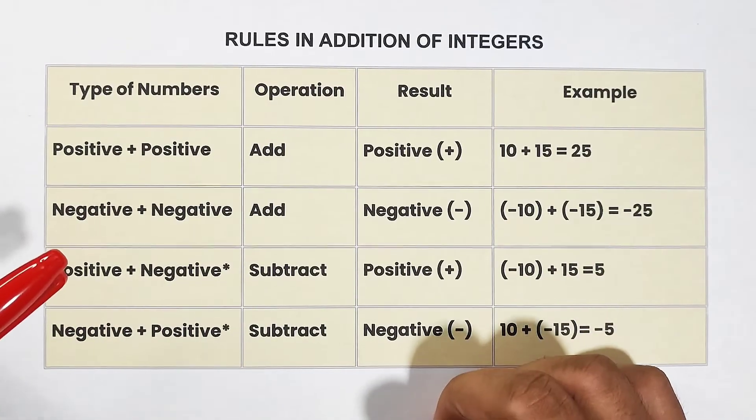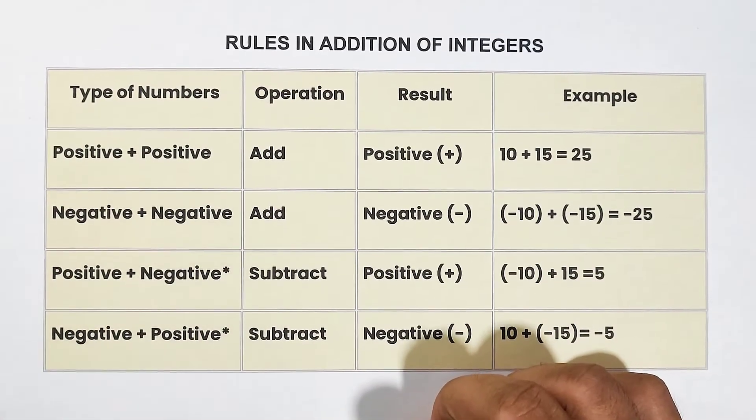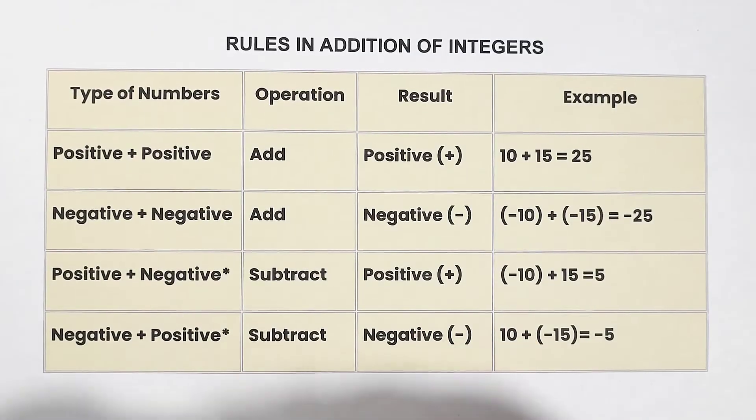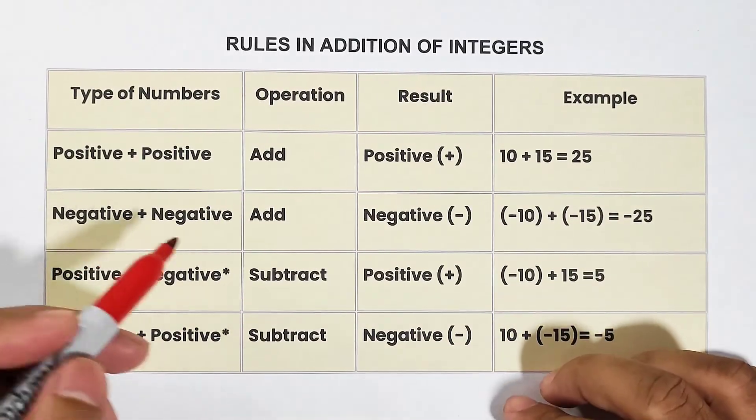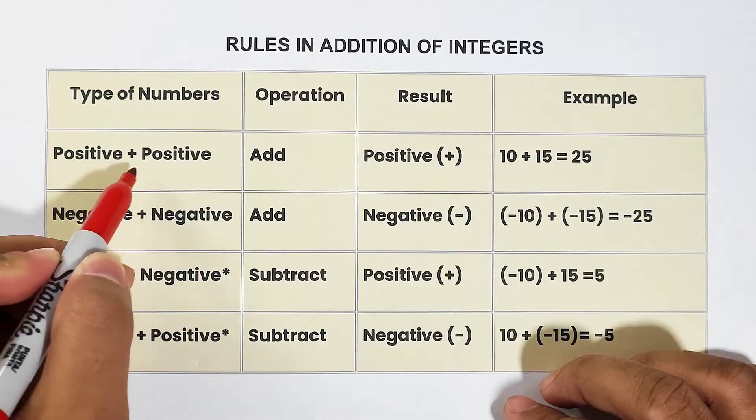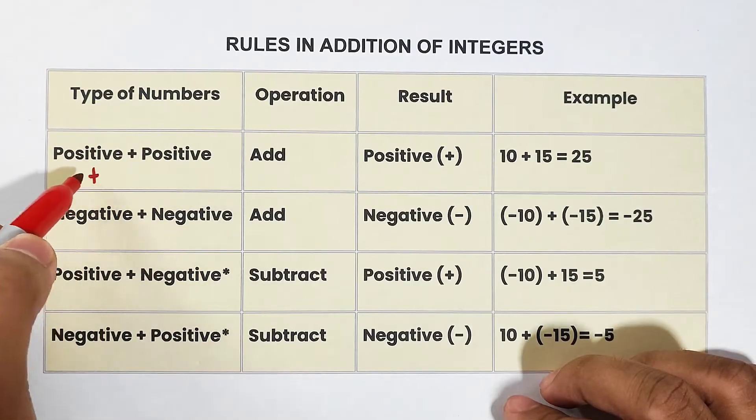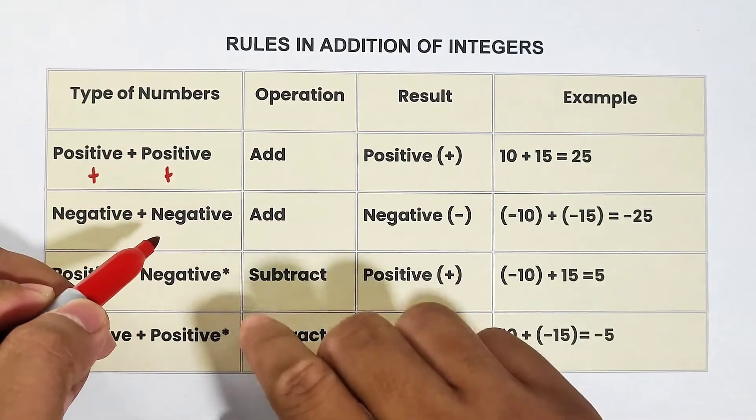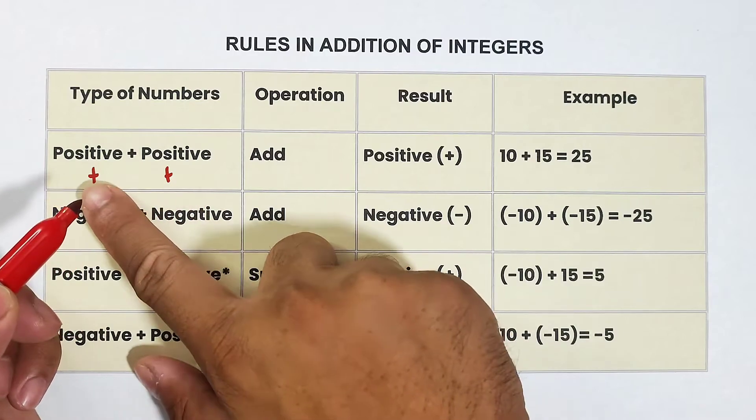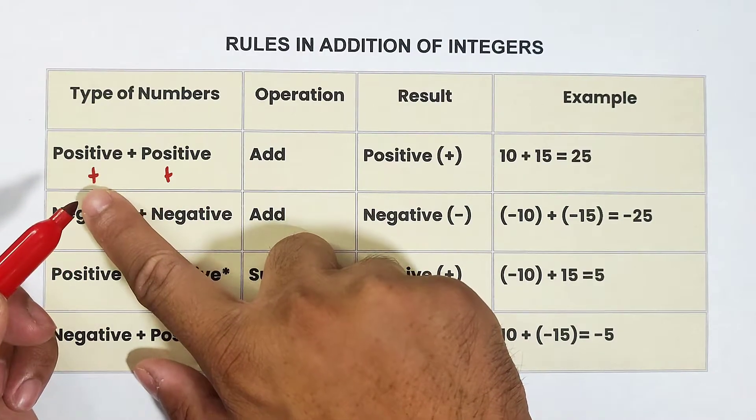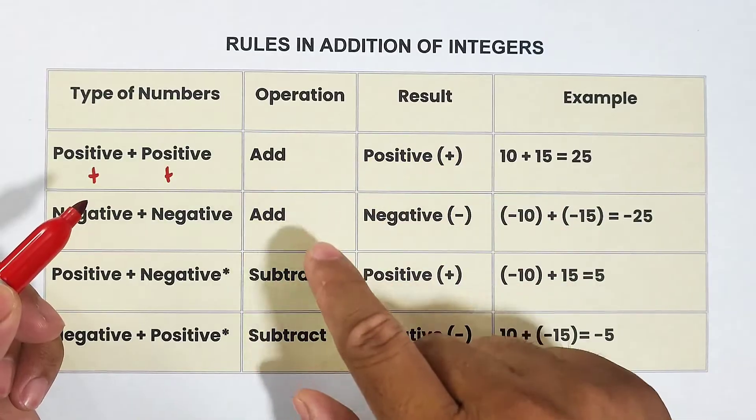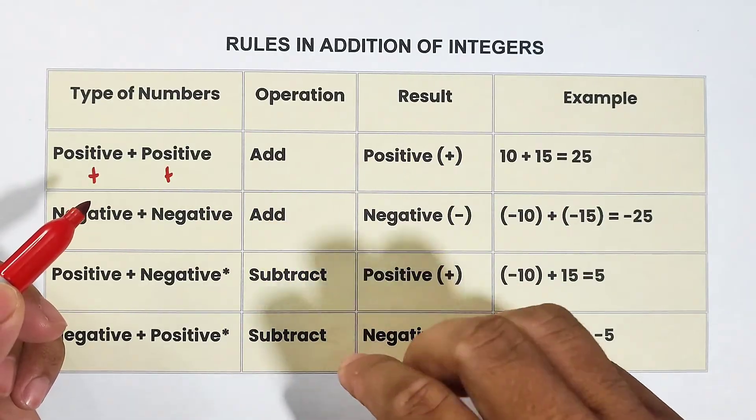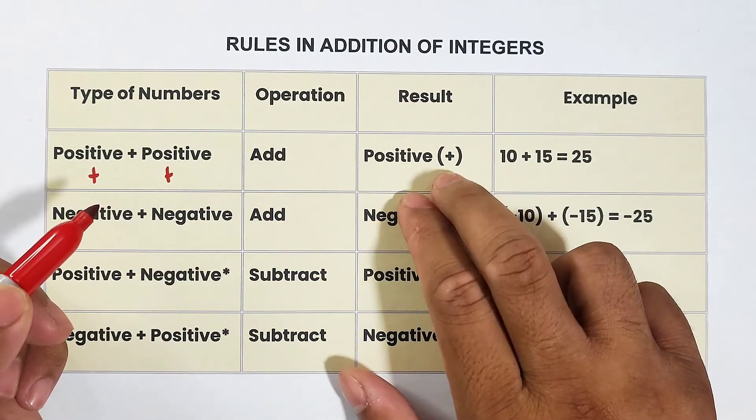Now, these are the possibilities that we have. So for the type of numbers, the first thing we encounter is adding positive and positive integer. So if your integers are the same, positive and positive, what you need to do is to add the numbers. And basically, the result is positive.